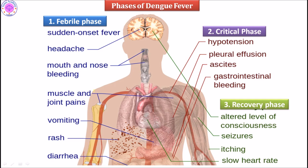Dengue fever typically has three phases. Phase one, the febrile phase, presents with sudden onset fever, headache, mouth and nose bleeding, muscle and joint pains, vomiting, rash, and diarrhea. Phase two, the critical phase, involves hypotension, pleural effusion, ascites, and gastrointestinal bleeding. Phase three, the recovery phase, may include altered consciousness, seizures, itching, and slow heart rate.